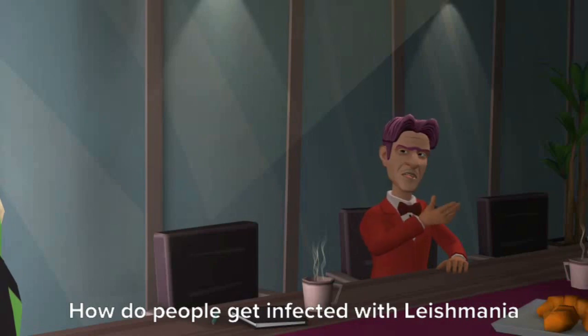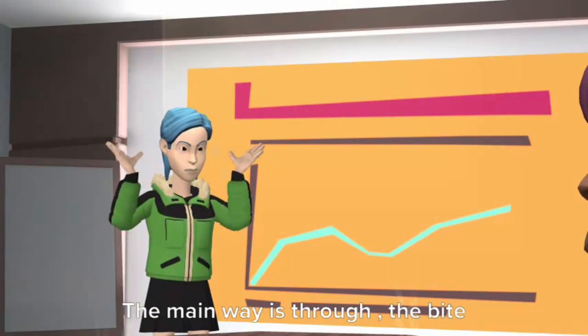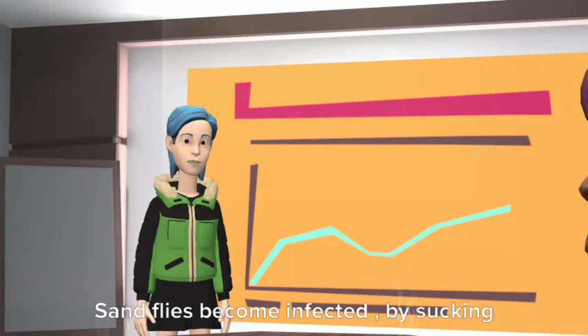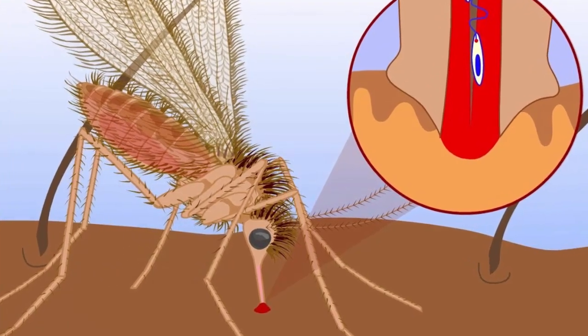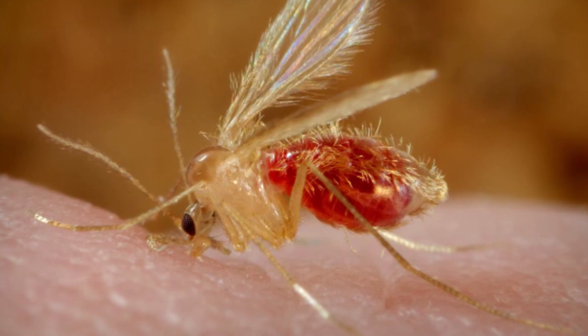How do people get infected with Leishmania parasites? The main way is through the bite of infected female phlebotomine sand flies. Sand flies become infected by sucking blood from an infected animal or person. People might not realize that sand flies are present.